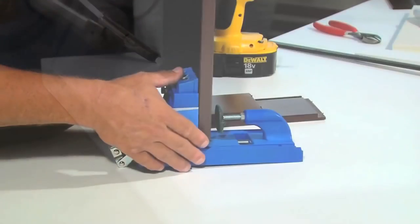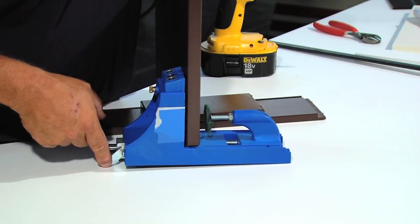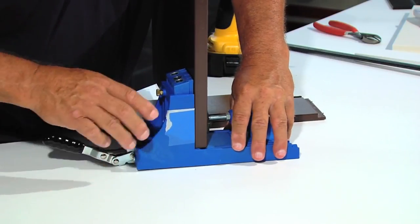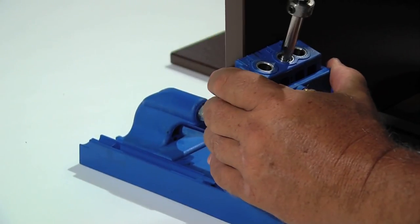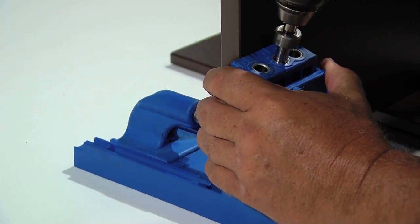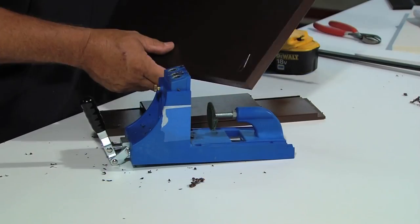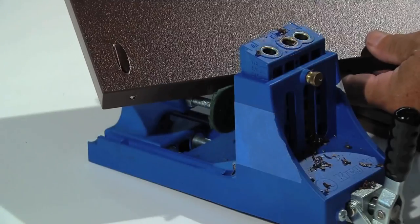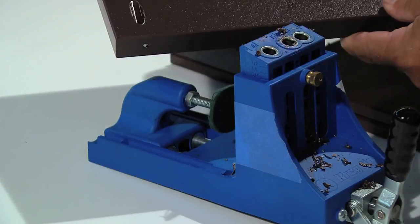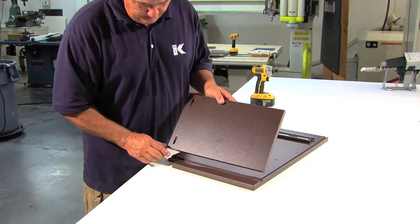Using a pocket hole jig is the best and fastest way to create strong plastic joints with concealed fasteners. Pocket joints are similar to dowel joints, except that a screw is used and only one joint element is to be drilled. The holes are drilled at a shallow angle on the back of the piece. These shallow holes conceal the fastener and create a very strong joint.